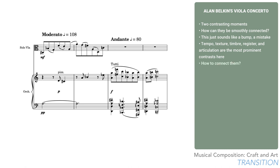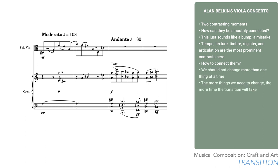So how to connect them? Well, the first thing to do is just to list the things which need to change, as we've done above: tempo, texture, timbre, register, and articulation. Since we're aiming at a gradual transition here, we shouldn't change more than one thing at a time. As a general principle, the more things we need to change, the more time the transition will take.